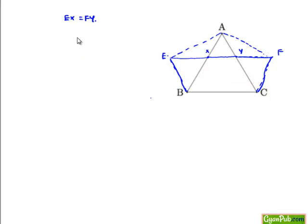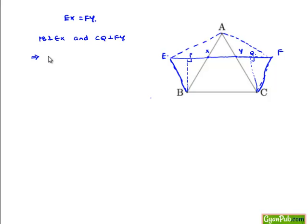Now we have EX is equal to FY. Let us draw BP perpendicular to EX and CQ perpendicular to FY. We know that the perpendicular distance between two parallel lines is always constant. Therefore, we can say BP is equal to CQ.